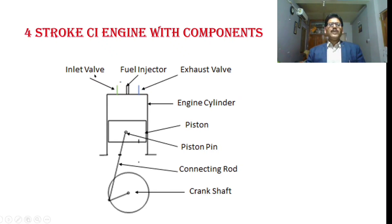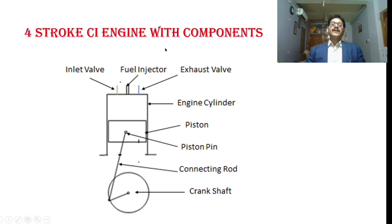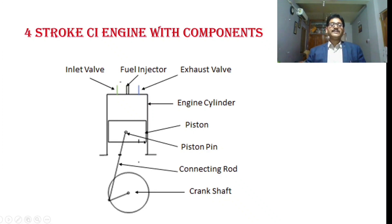Some of the components of the compression ignition engine are shown here. You have an inlet valve, through which air is drawn into the engine cylinder. You have an exhaust valve, through which the burnt air-fuel mixture is removed from the system. You have a fuel injector which injects fuel at the end of the compression stroke. You have a fuel feed pump which feeds high pressure fuel into the engine cylinder. There is the engine cylinder, the cylinder head, and the piston which reciprocates inside the cylinder. A piston pin or gudgeon pin connects the piston with the crankshaft, and there is the connecting rod and the crankshaft.